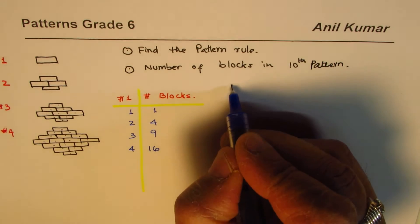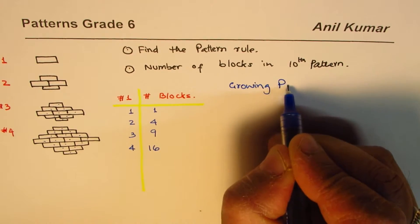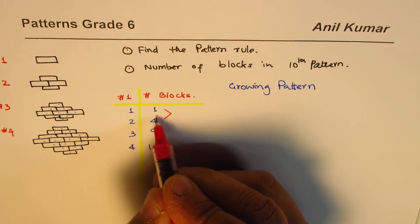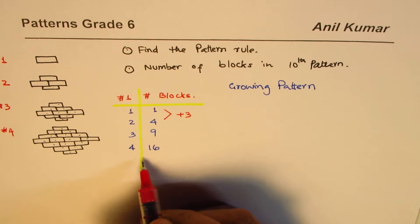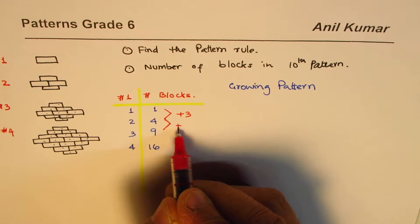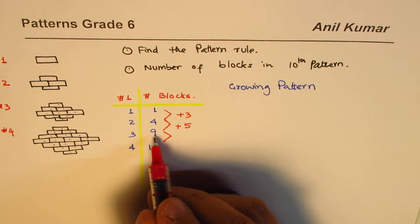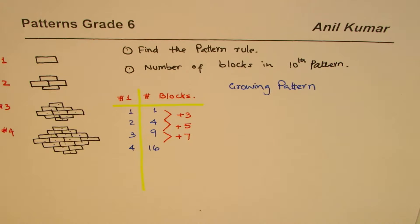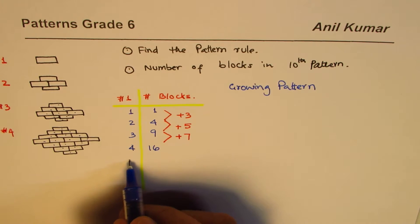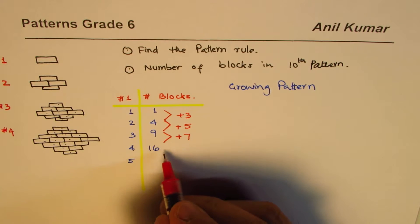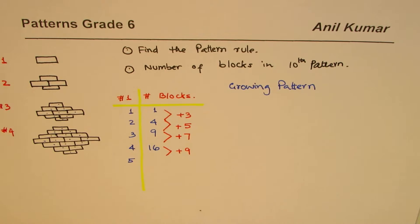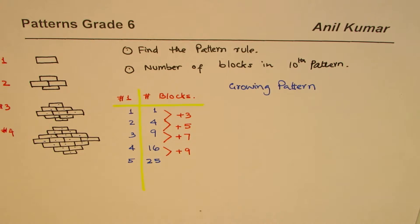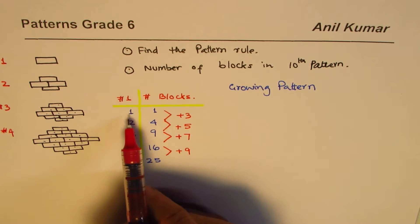We have a growing pattern. To find how it grows: one plus three is four, four plus five is nine, nine plus seven is sixteen — so each time we add two more than before. Following this pattern, the fifth design should have sixteen plus nine, which is twenty-five.